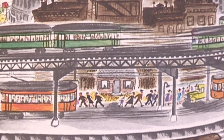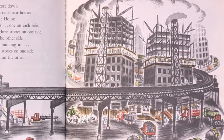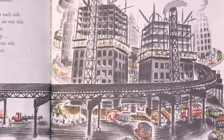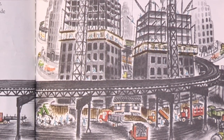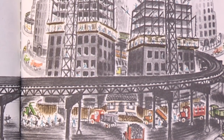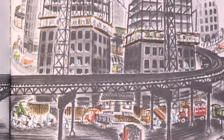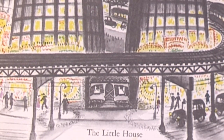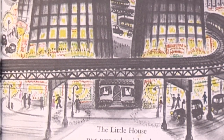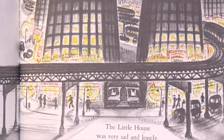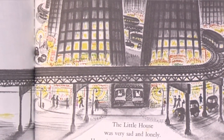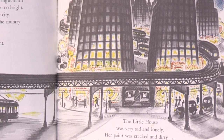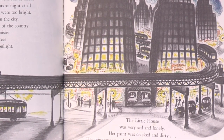Pretty soon they tore down the apartment houses and tenement houses around the little house and started digging big cellars, one on each side. The steam shovels dug down three stories on one side and four stories on the other. Pretty soon they started building up — 25 stories on one side and 35 stories on the other. Now the little house only saw the sun at noon and didn't see the moon or stars at night at all because the lights of the city were too bright. She didn't like living in the city. At night she used to dream of the country and the field of daisies and the apple trees dancing in the moonlight. The little house was very sad and lonely. Her paint was cracked and dirty, her windows were broken, and her shutters hung crookedly. She looked shabby, although she was just as good a house as ever underneath.